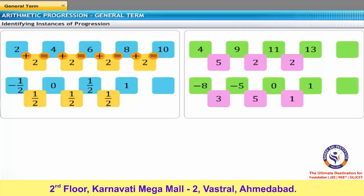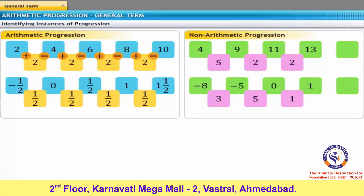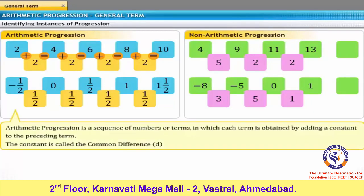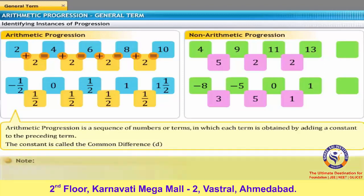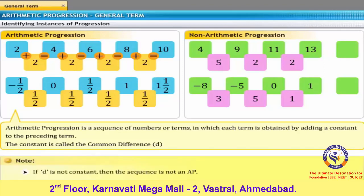The pattern in the first two examples shows that you can obtain successive terms by adding a fixed number or a constant to the preceding terms. Such a list of numbers is said to form an arithmetic progression. An arithmetic progression or AP is a sequence of numbers or terms in which each term is obtained by adding a constant to the preceding term. This fixed number or constant is called the common difference of the arithmetic progression. It is represented by D. Remember, if D is not constant, then the sequence is not an AP. D can be a positive number, negative number, or 0.